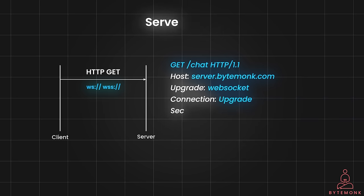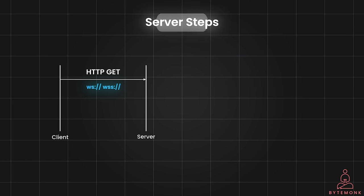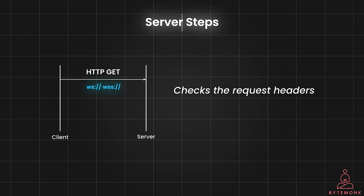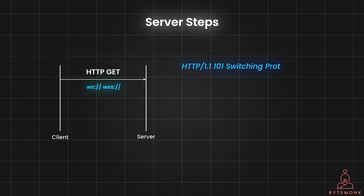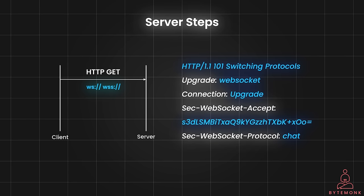On the other end, when the server receives the HTTP GET request from the client, it checks the request headers to ensure that they are valid for a WebSocket handshake, and sends an HTTP response with a status code of 101 Switching Protocols to indicate a successful upgrade to WebSocket. Let's go through these steps in detail.